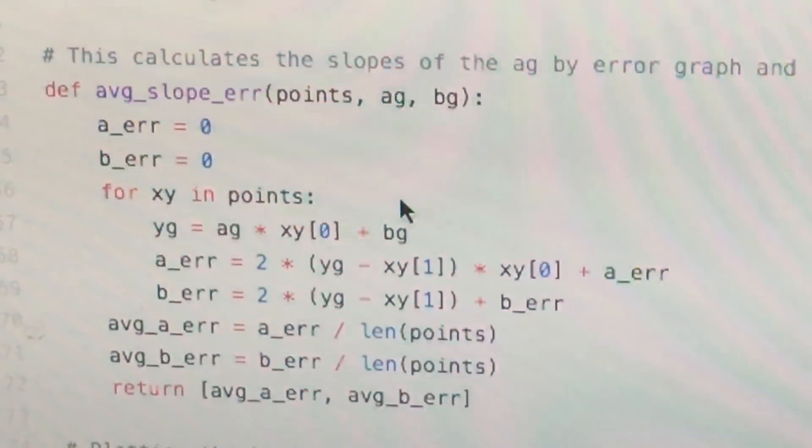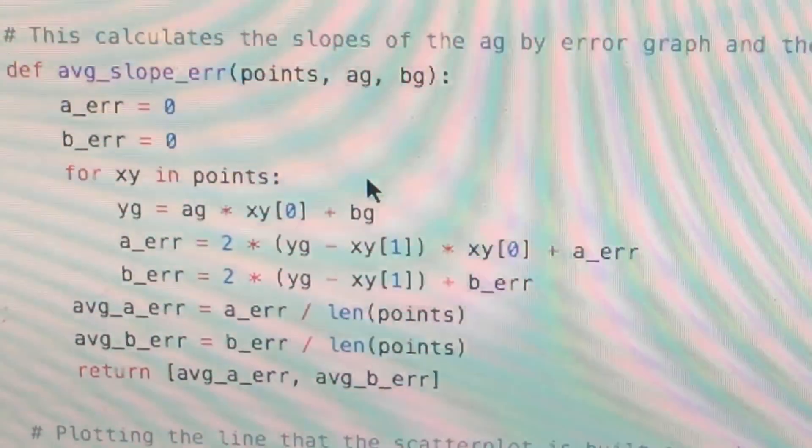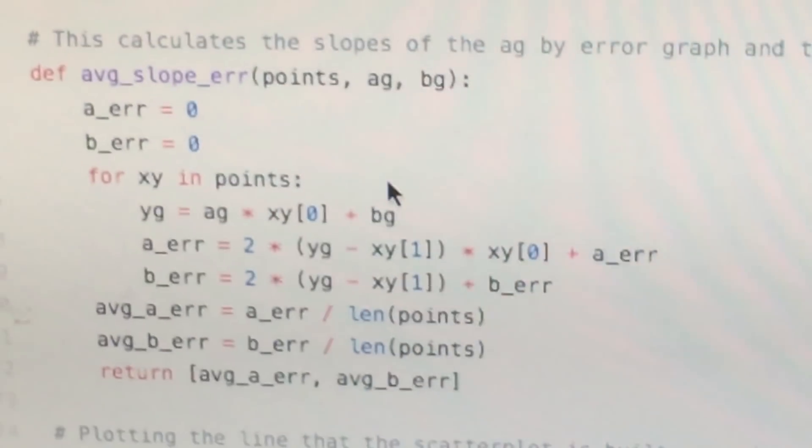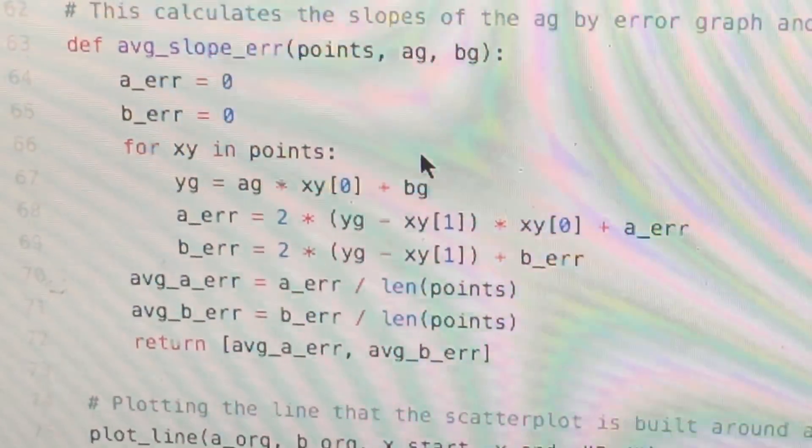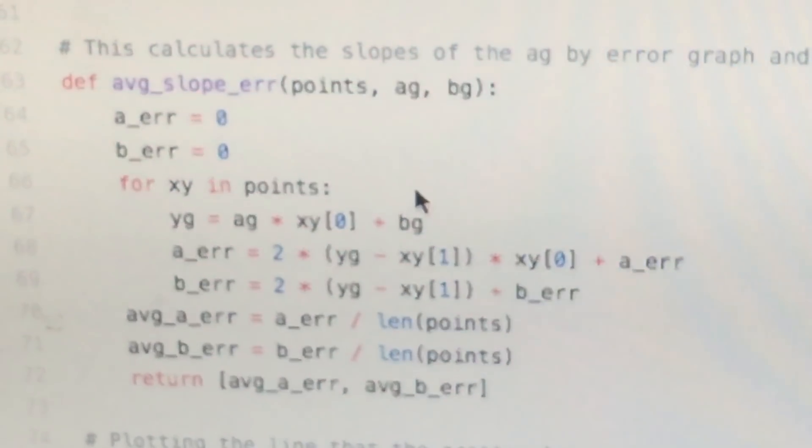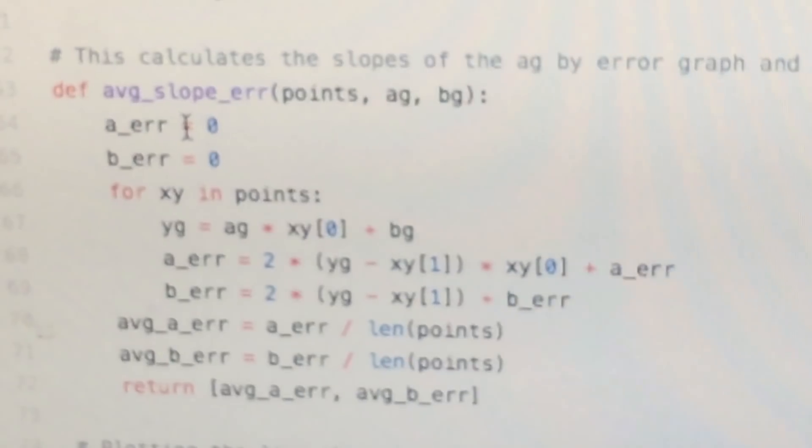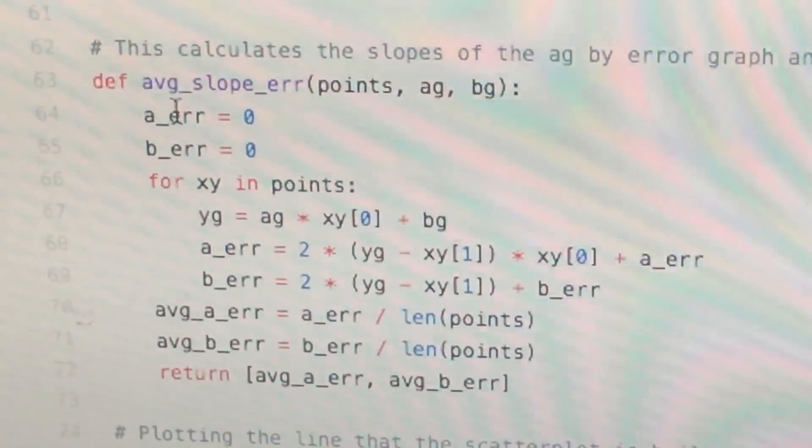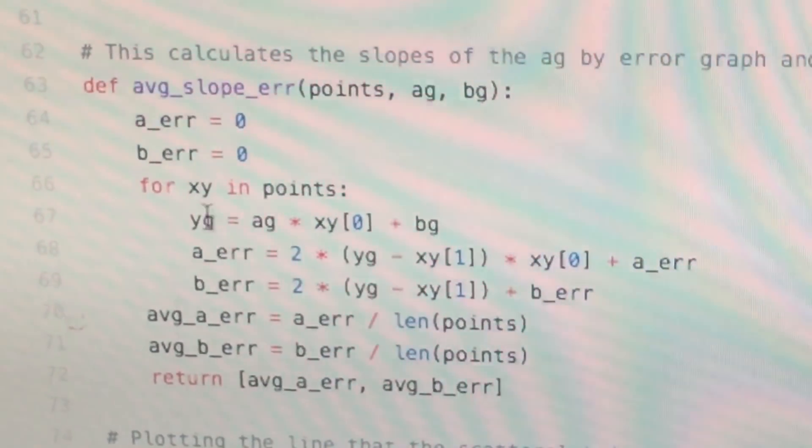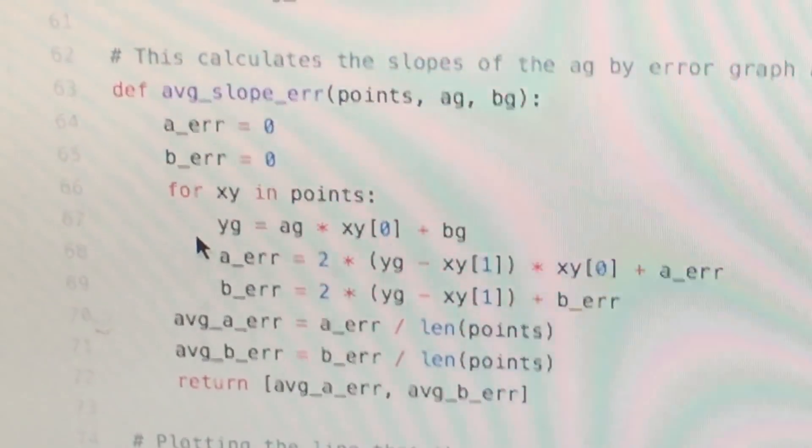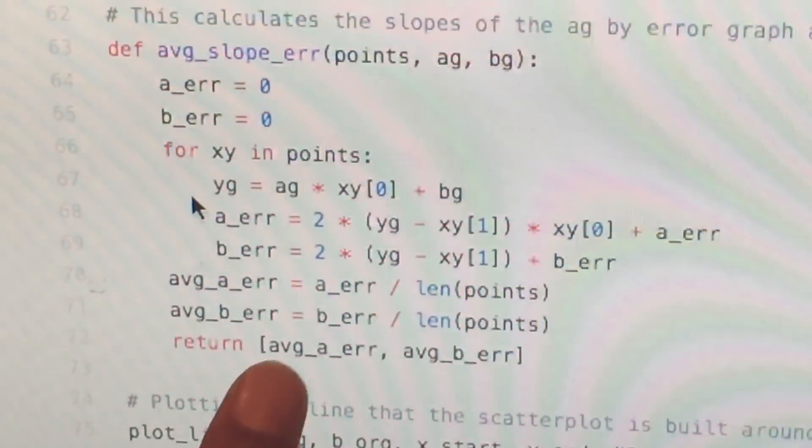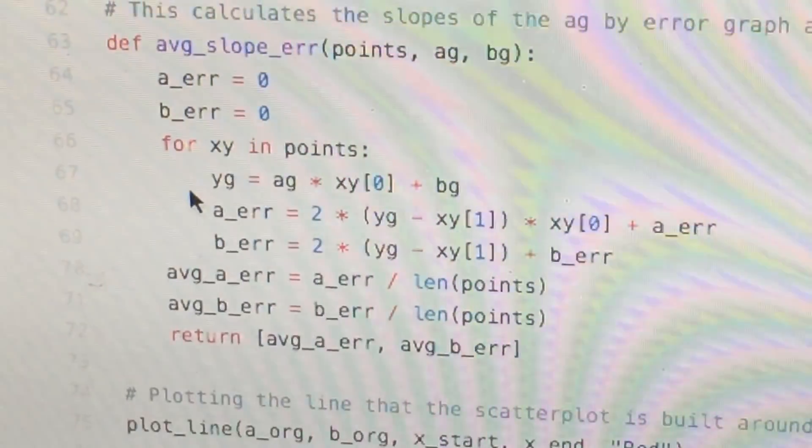I will explain this better in my next video, but this calculates the slope of the AG and BG - the a guess and b guess - and the error graph, which is basically the graph of the three-dimensional mountain. So it calculates the slope when it gives you points and a guess and the b guess. And then it calculates and it sets the error.